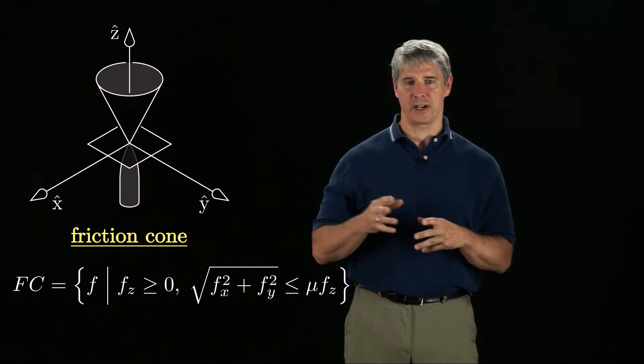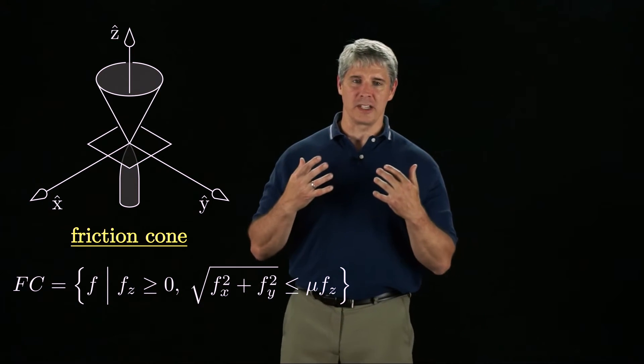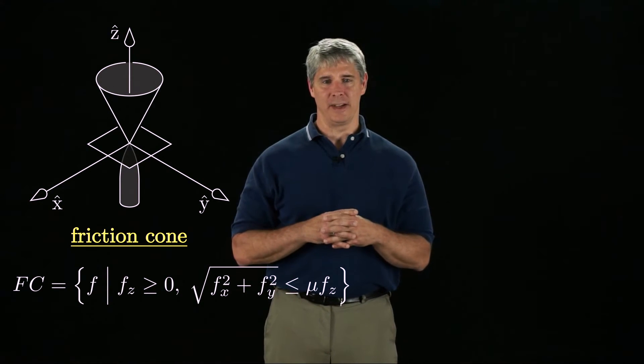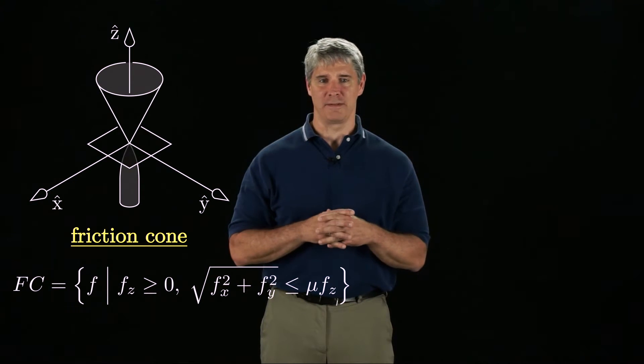The set of all forces that can be transmitted through a Coulomb friction contact can be visualized as a friction cone. For a frame defined at the contact, the normal force Fz must be non-negative, and the tangential force magnitude must be less than or equal to mu times Fz.